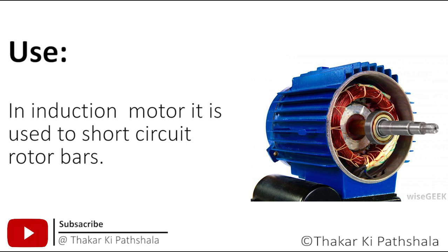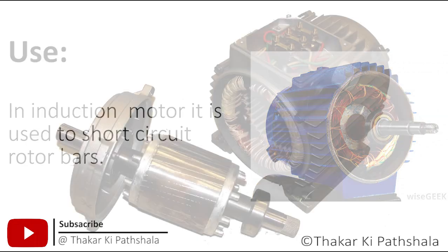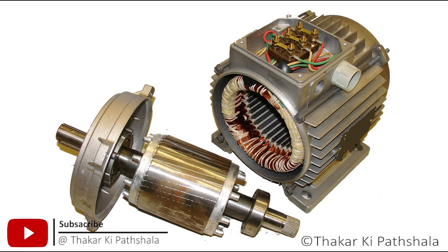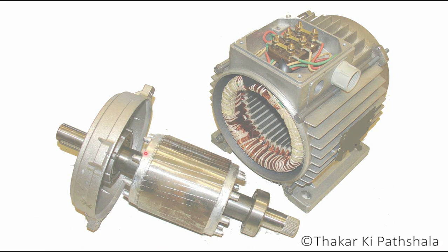End rings are made up of aluminium or copper and form a closed structure like a cage. You can see the construction of end ring in this picture — here, this is the end ring.